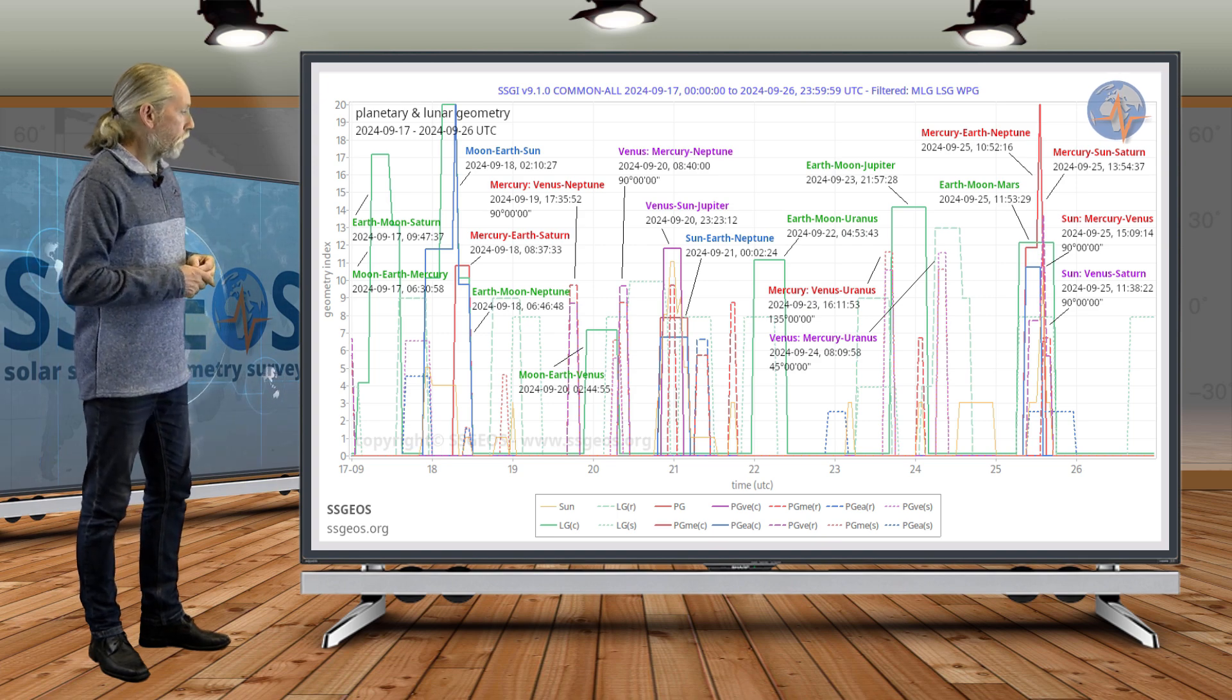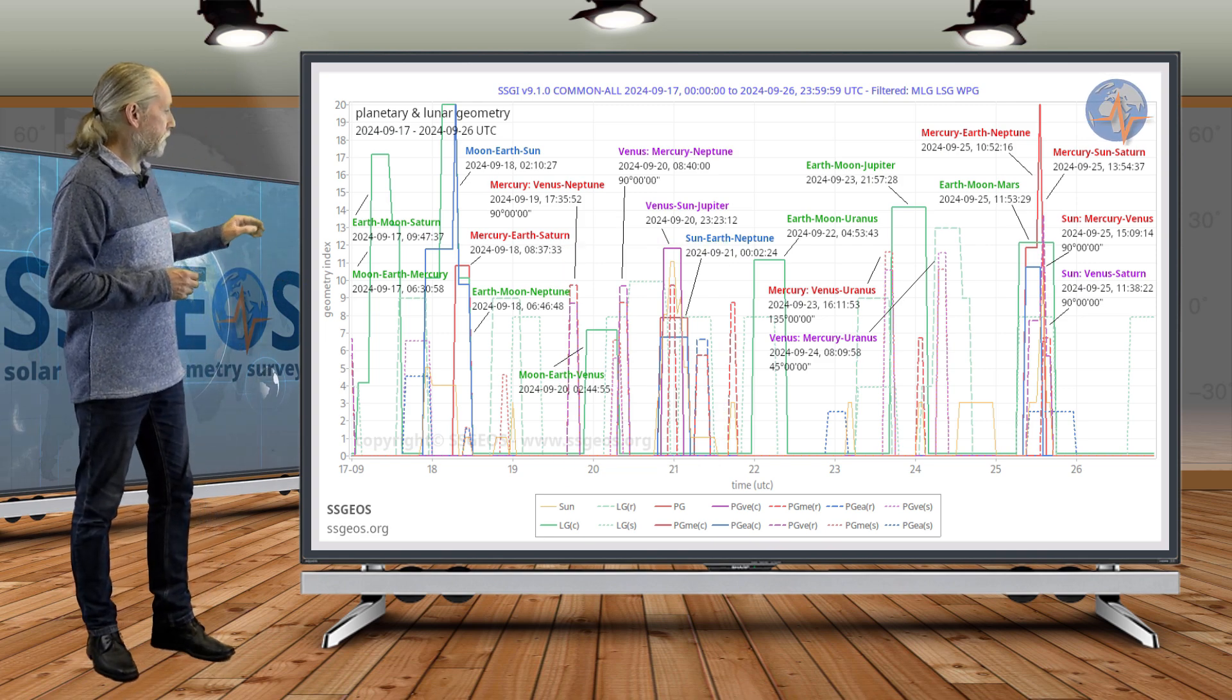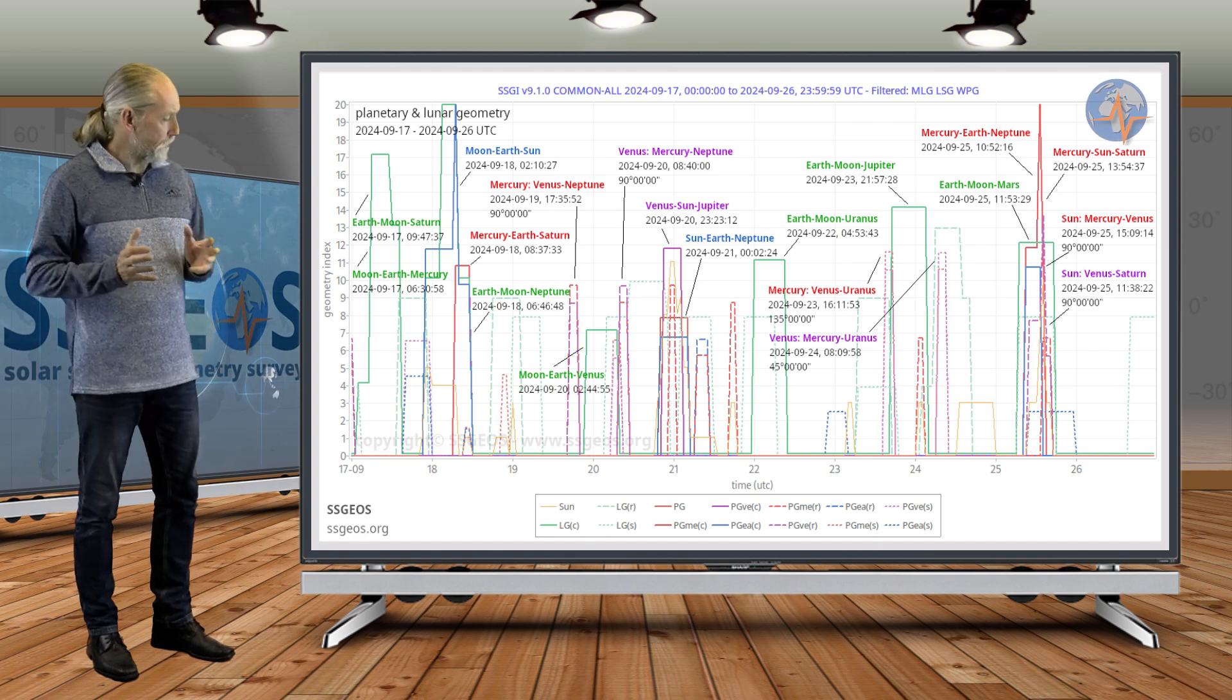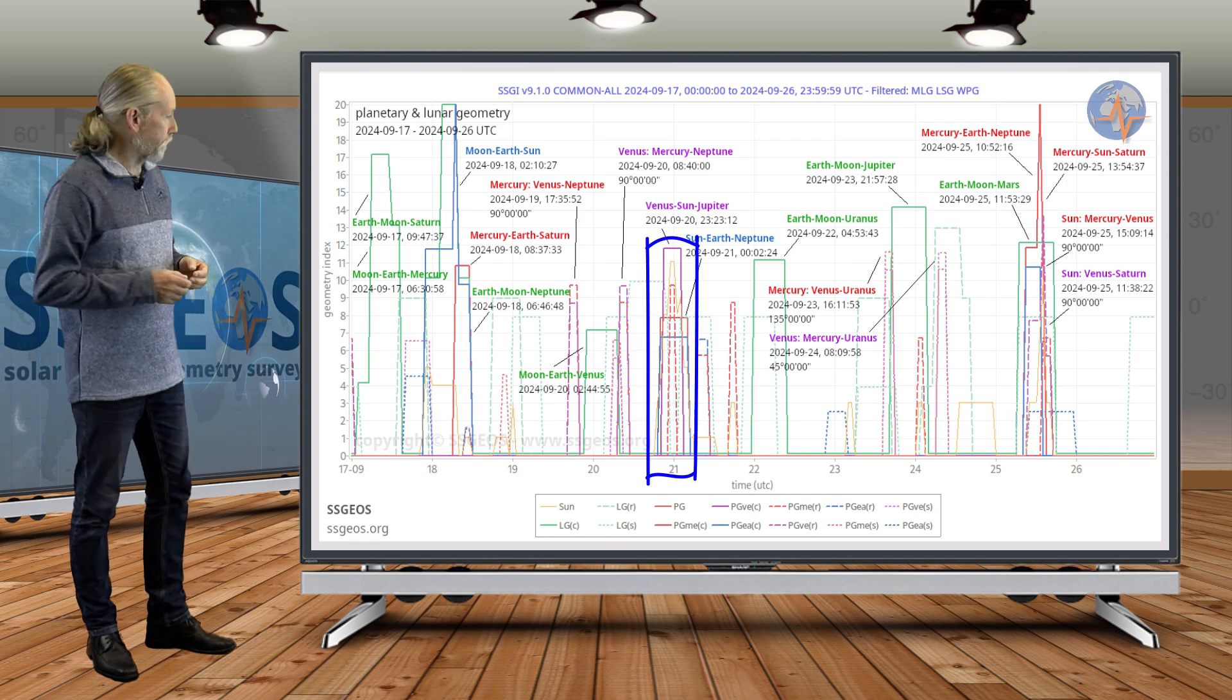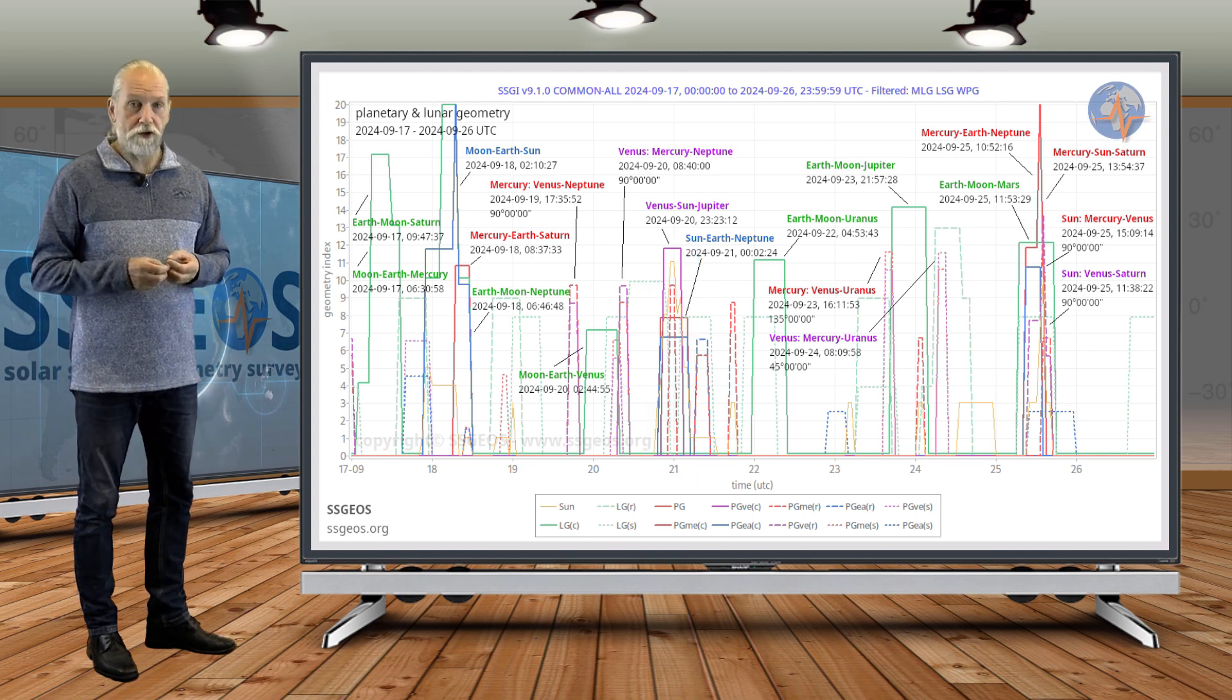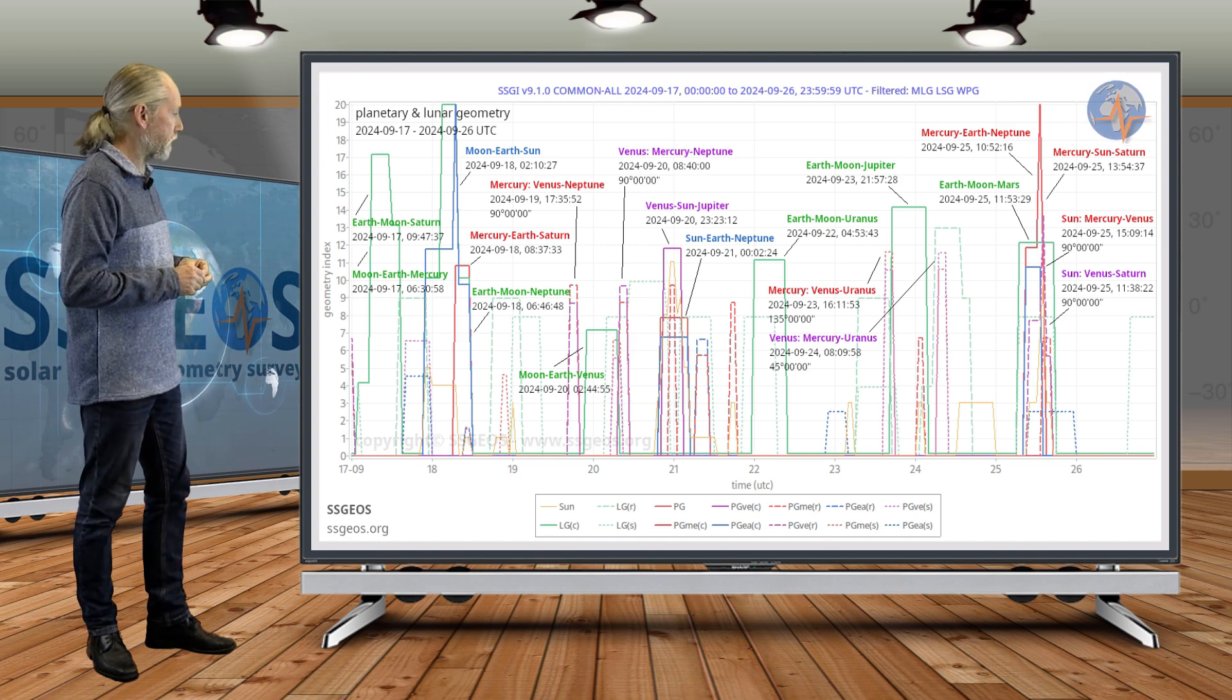Then we see a convergence coming up of critical planetary geometry starting on the 19th with right-angle geometry involving Mercury, Venus, and Neptune. And that will be followed by a convergence of Venus, Sun, Jupiter in a conjunction and Sun, Earth, Neptune. There you have it on the 21st: Sun, Earth, and Neptune. So we have two planetary conjunctions converging there. That is going to be a critical situation.